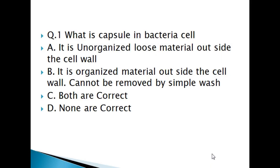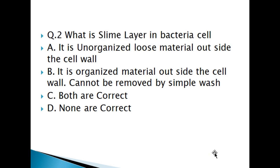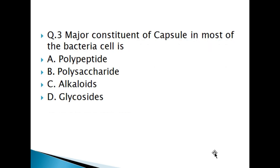Question 1: What is a capsule in a bacteria cell? A) It is unorganized loose material outside the cell wall. B) It is organized material outside the cell wall and cannot be removed by simple washing. C) Both are correct. D) None are correct. Question 2: What is a slime layer in a bacteria cell? A) It is unorganized loose material outside the cell wall. B) It is organized material outside the cell wall and cannot be removed by simple washing. C) Both are correct. D) None are correct.